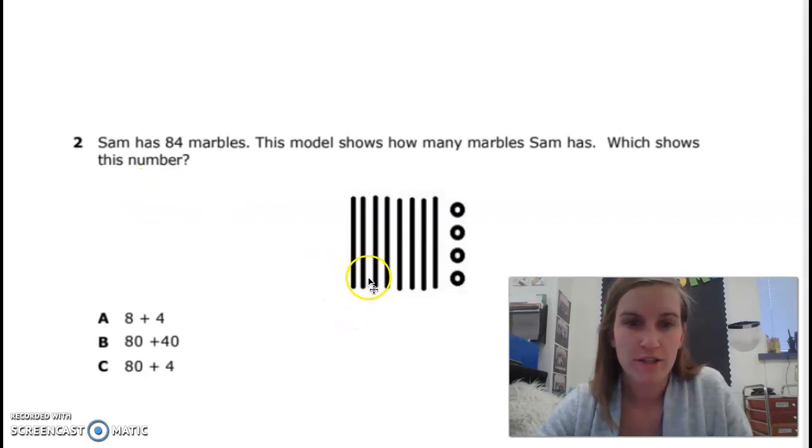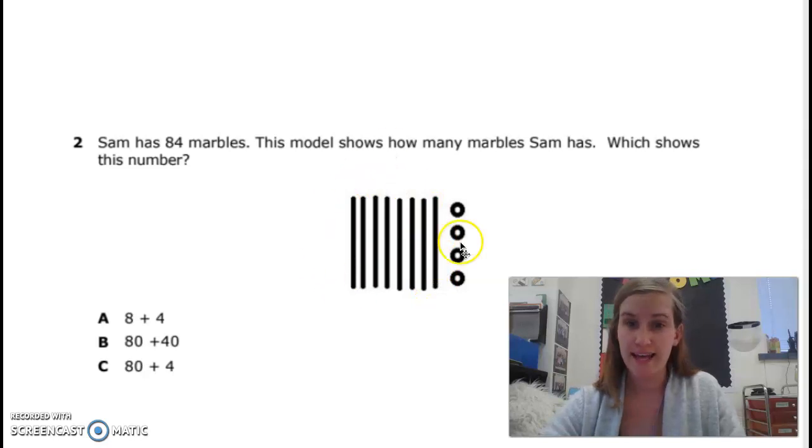Well, we have 1, 2, 3, 4, 5, 6, 7, 8 tens, which has a value of 80. 8 groups of tens is 80. And then 4 extra ones.